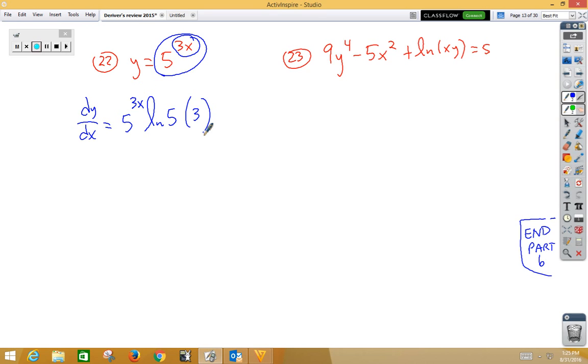In 23, we have implicit differentiation with chain rule, and we need to really be careful about this inside function because that's product rule. So the derivative of 9y to the 4th would be 36y cubed dy/dx. Remember when you take the derivative of a y term, you need to multiply by dy/dx, minus 10x plus, out here comes our chain rule with product rule. We have the derivative of natural log, which is 1 over something, don't change the something, multiply by the derivative of that something, which would be first derivative of the second plus the second derivative of the first is equal to 0. Remember, we have f, we have g, so this is f times g prime, plus g times f prime.